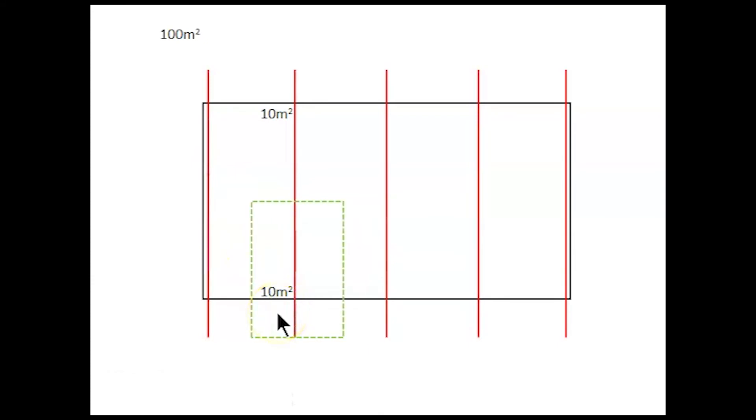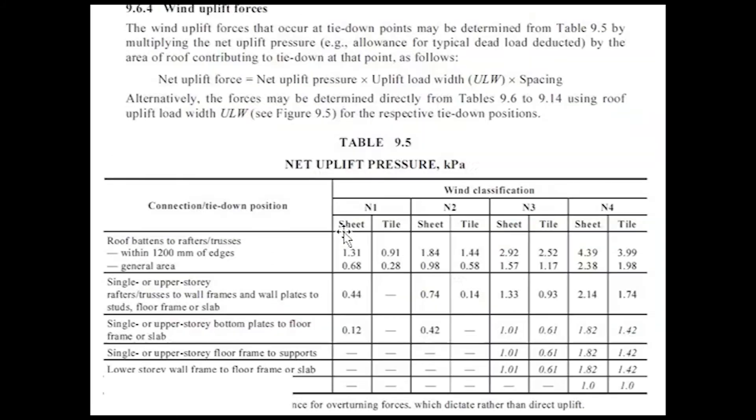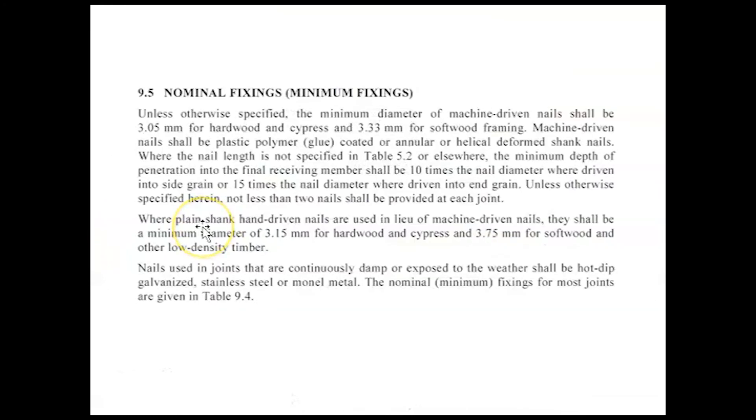So let's skip back to our plan. Here it is here. The area that fixing is tying down is 10 square meters worth. So we just go uplift pressure 0.74 times our area. So 0.74 times 10 square meters means 7.4 for the strength of our fixing. So our fixing has to resist 7.4 kilonewtons of force.